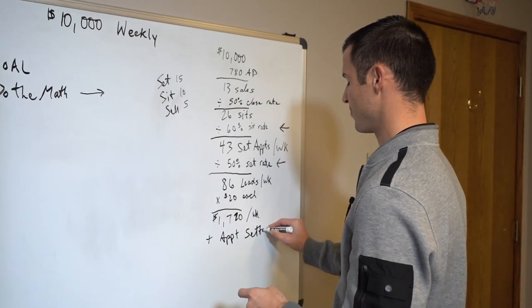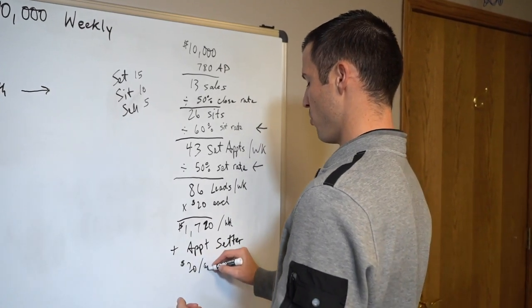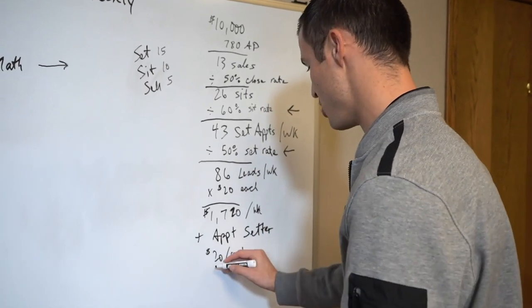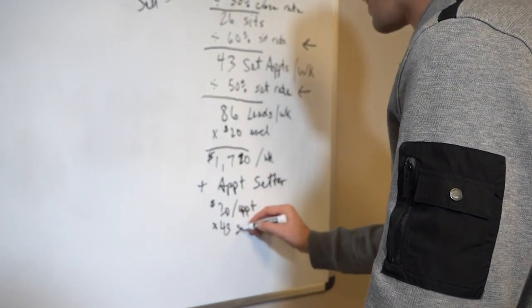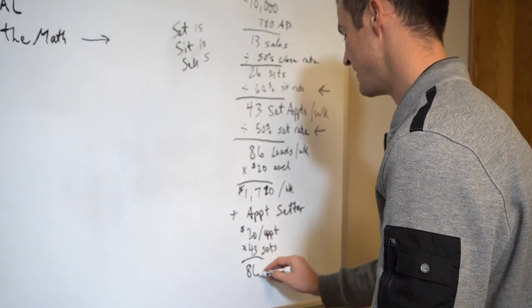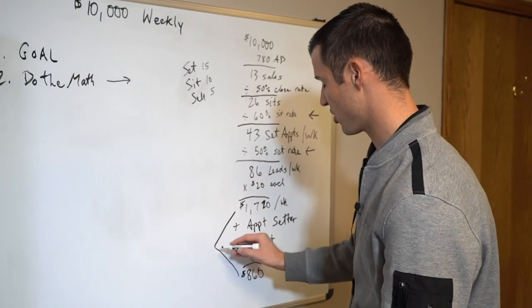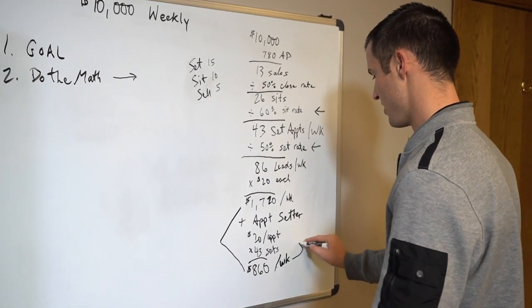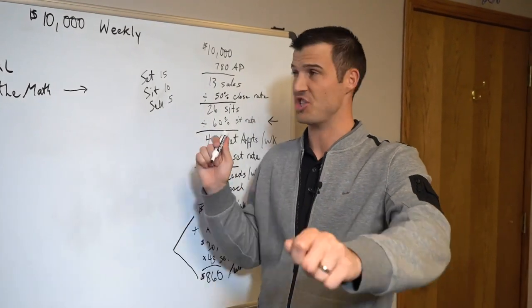So now you got to decide if you need an appointment setter. Because if you need an appointment setter, and let's just say that you pay $20 per appointment that they set, and they set 43, then now you got to do that math. Take that times 43 sets, which is $860. So then, not only are you at $1,720, but you've also got to add in $860 per week to pay the appointment setter.